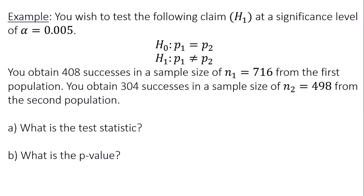You wish to test the following claim, H1 or the alternative hypothesis, at a significance level of alpha equals 0.005. I have my two hypotheses listed here: the null hypothesis H0 and the alternative hypothesis H1. Notice that H1 has not equal to as its sign, and that's also our claim.